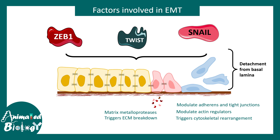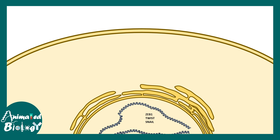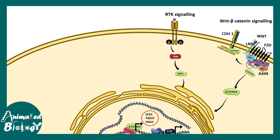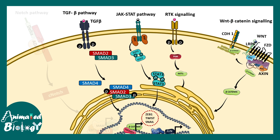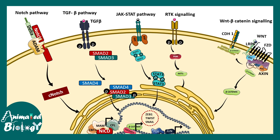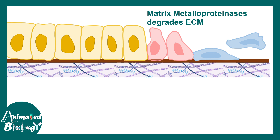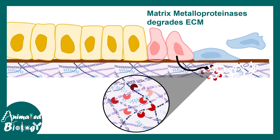Several signaling pathways converge to generate these transcription factors, including the Wnt/beta-catenin signaling pathway, receptor tyrosine kinase, JAK-STAT, TGF-beta, and Notch signaling pathways — all implicated in cancer metastasis. A common theme of these pathways is that they upregulate ZEB1, Twist, and Snail, leading to epithelial to mesenchymal transition. Matrix metalloproteinases (MMPs) are key factors in metastasis — once secreted by the cell, they break down the extracellular matrix, making it easier for a mesenchymal cell to invade.